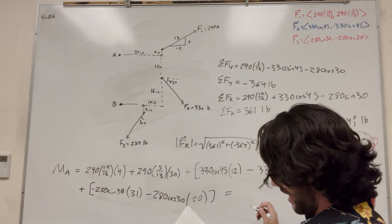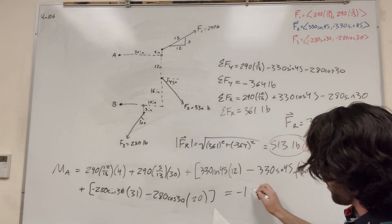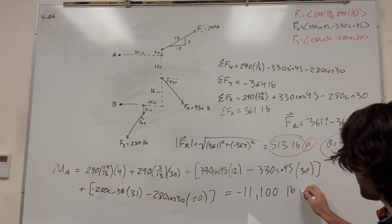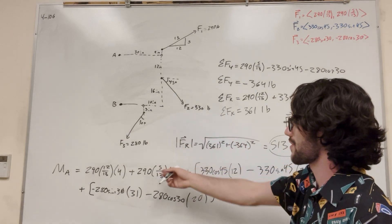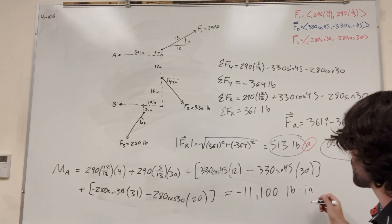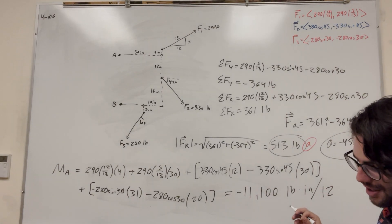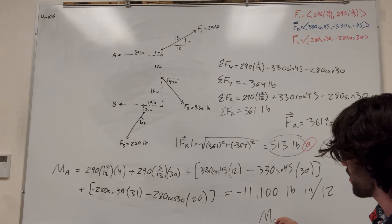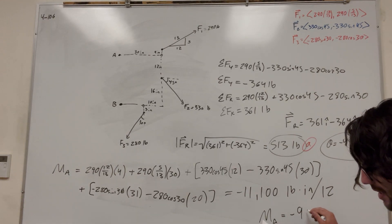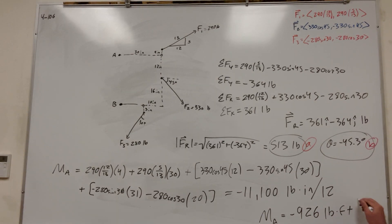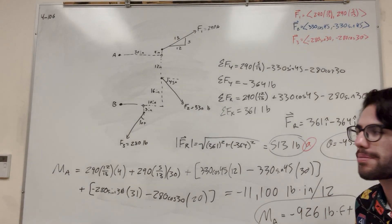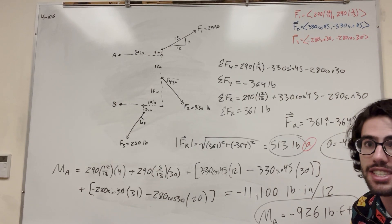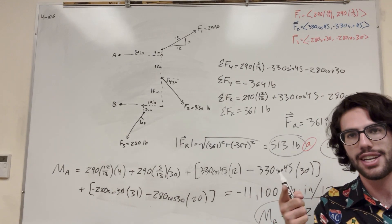If you do all of this, you get negative 11,100 pound-inches. We have it in pound-inches, but we don't want that — we want pound-feet. So divide by 12, because there are 12 inches in a foot. That gives you the moment around A equals negative 926 pound-feet. The negative tells us it's going clockwise. That's how you solve this problem — just break it into parts and it's as easy as any other problem. Thanks for watching and good luck on your statics!